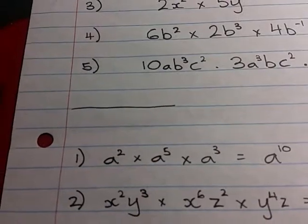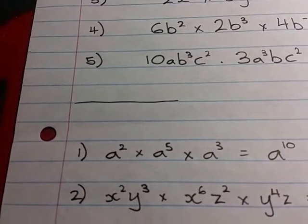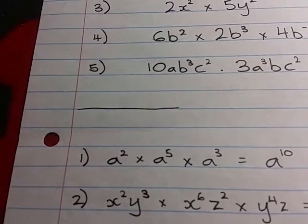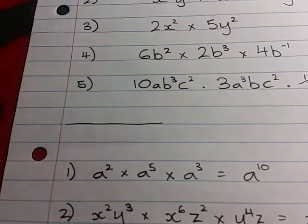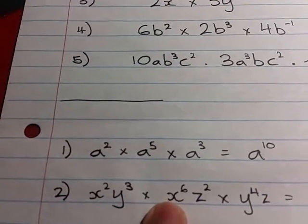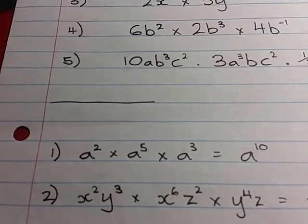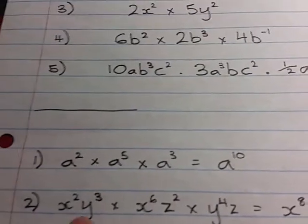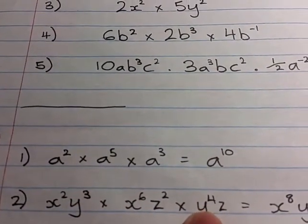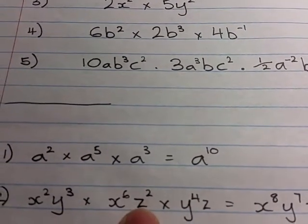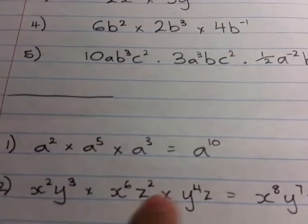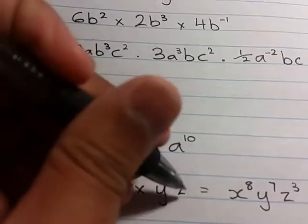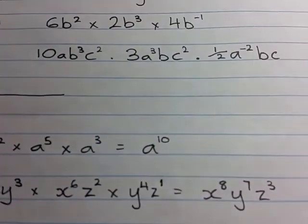The second one, x squared y cubed times x to the 6, z to the 2, times y to the 4, z. The two x's can multiply and add the exponents, so you end up with x to the 8. The y to the 3 multiplies with the y to the 4, giving you y to the 7. And then z to the 2 multiplying with that z over there, remember that's a z to the 1, so that's 2 plus 1, giving you z to the 3.